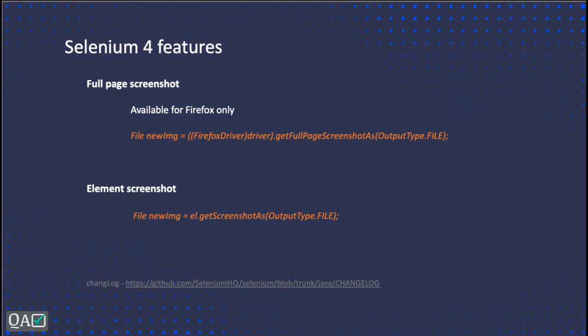The second one is taking an element screenshot — you can take a screenshot of a particular element. It can be a single element or a group of elements if they share a parent element. Taking the parent element screenshot will include all child elements inside it. This is a good feature in Selenium 4 because before we had to use third-party libraries for full page screenshots, but now it is built in.